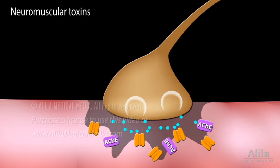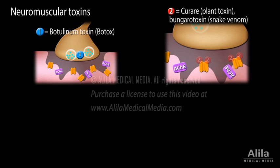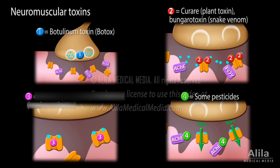Substances that cause muscle weakness or paralysis do so by interfering with the function of the neuromuscular junction. Botulinum toxin prevents acetylcholine release from the presynaptic side of the junction. Some other toxins attach to nicotinic receptors, blocking acetylcholine from binding but do not open the ion channel. Certain drugs lodge into the channel of the nicotinic receptor, blocking the passage of sodium. All these substances prevent activation of muscle cells and cause flaccid paralysis. On the other hand, some pesticides inhibit acetylcholinesterase, preventing degradation of acetylcholine, causing continuous activation of muscles and inducing muscle spasms and spastic paralysis.